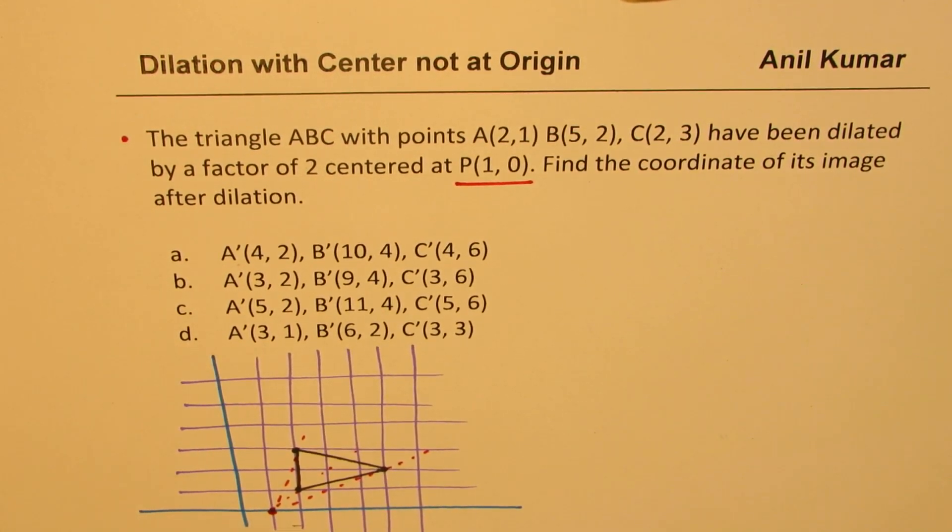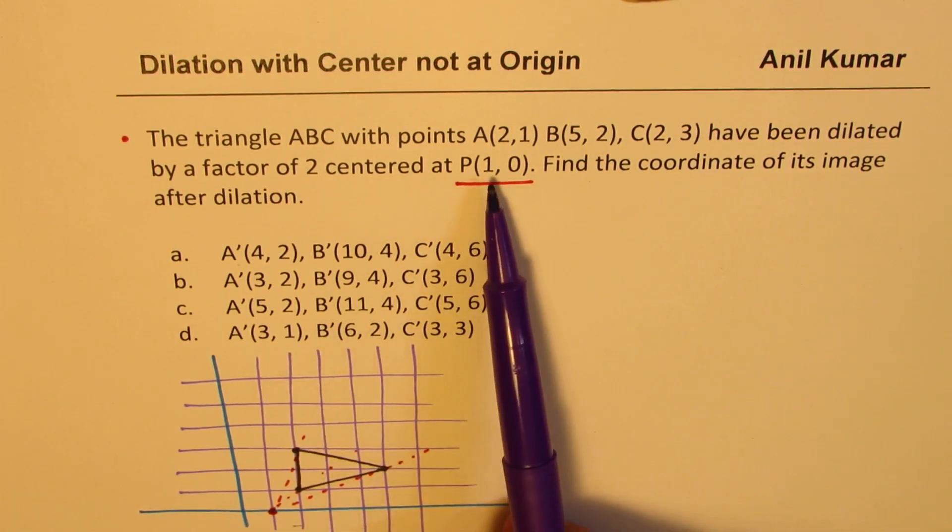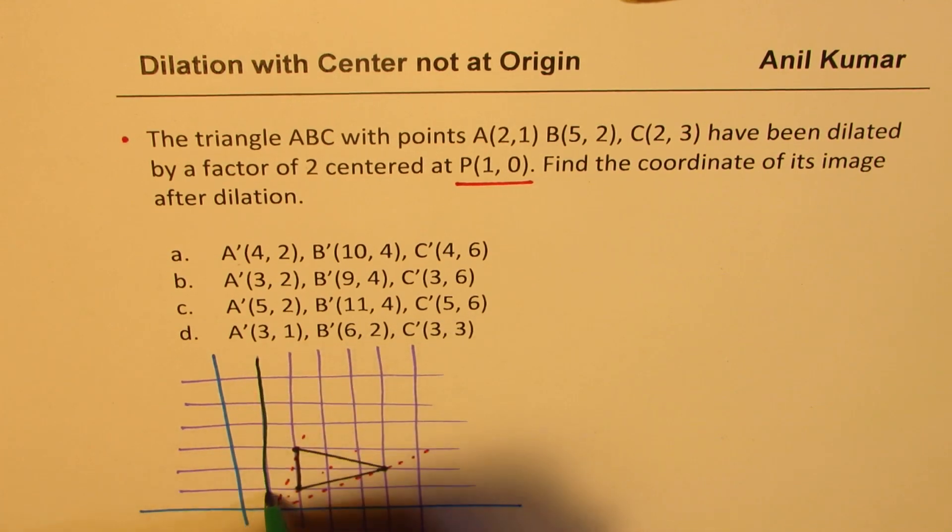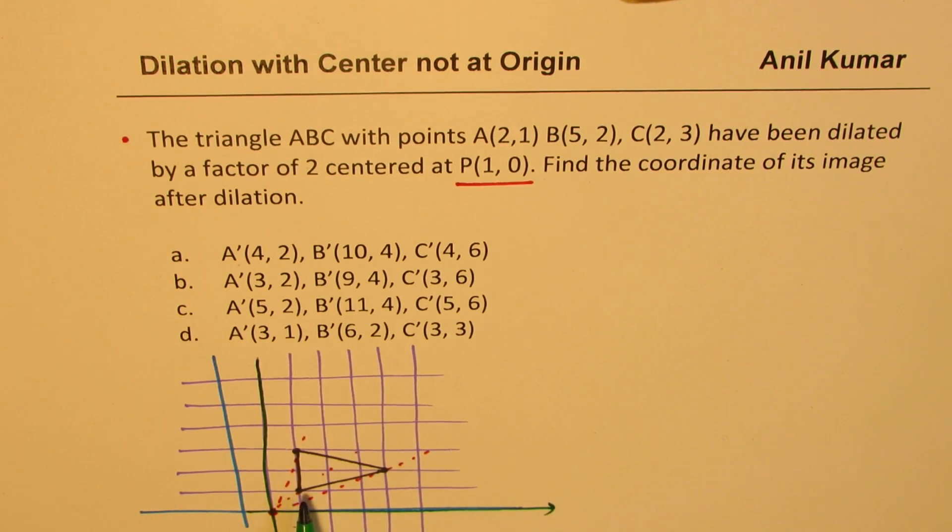Now how do you do without kind of graphing and accurately get the result? Well the idea here is that since we know that dilation by a factor of 2 we should be multiplying all these coordinates by 2. However the center is not the origin. So what we can do here is we can think about creating a new coordinate plane with center at the given point. You get the idea. So if you do that then the points get changed. That is the concept.